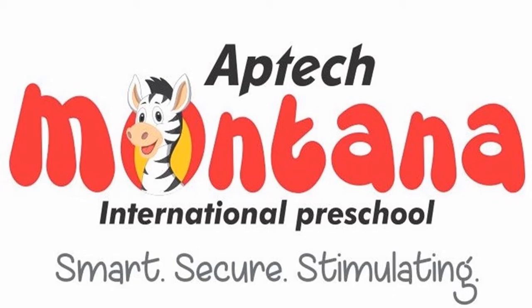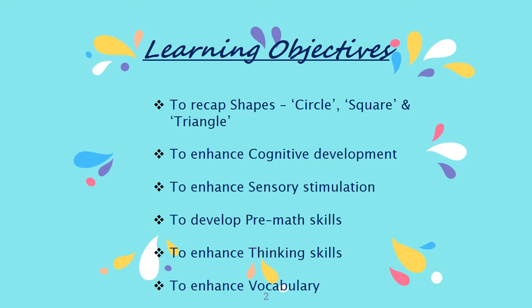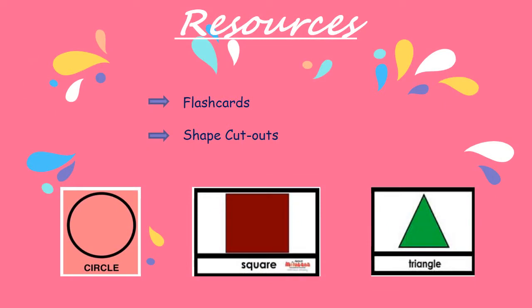So children, till now we have learned about three kinds of shapes. We will see the recap shortly. But first we will look at the learning objectives and the resources needed for the activity. The learning objectives are to recap shapes — circle, square, and triangle — to enhance cognitive development, sensory stimulation, pre-math skills, thinking skills, and vocabulary. The resources needed for the activity are flashcards and shape cutouts.